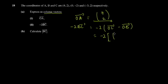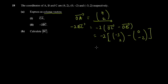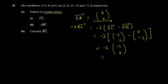Using square brackets for column vectors: OC is point C, which is (-3, 2), then minus OB which is (0, -2). So you get: x-component: -3 - 0 = -3, and y-component: 2 - (-2) = 2 + 2 = 4. So BC = (-3, 4).